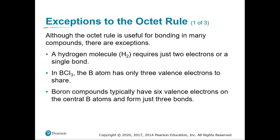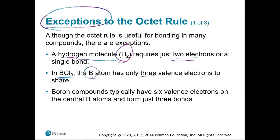The last topic is exceptions to the octet rule. Although the octet rule applies to many compounds, there are some exceptions. A hydrogen molecule, H2, requires just two electrons — a single bond — and won't ever have eight. In BCl3, boron has only three valence electrons to share. Boron compounds typically have six valence electrons on the central boron and form only three bonds, not four. Boron is happy with six, not eight.